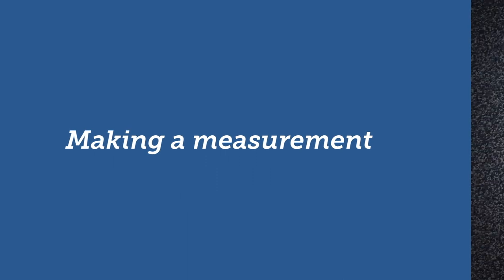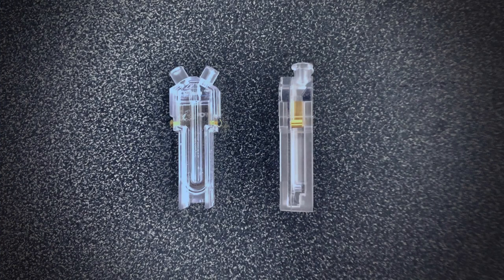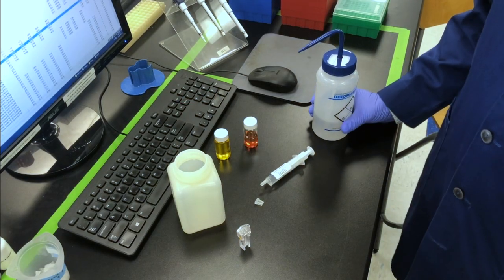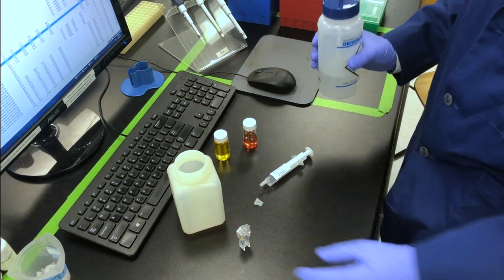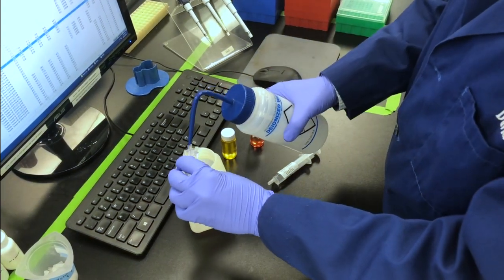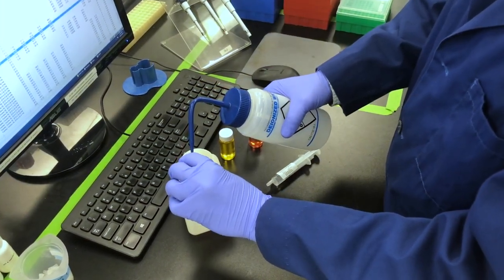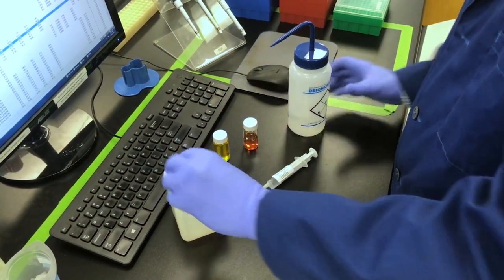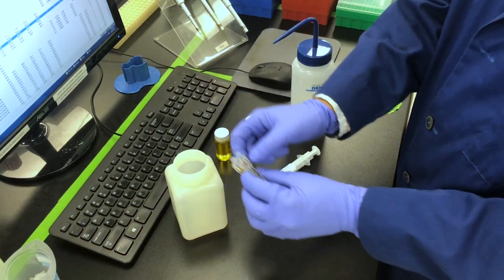We will be performing this demo with Malvern's most commonly used consumable product for zeta analysis, the folded capillary cell part number DTS 1070. Firstly, be sure to use some deionized water to rinse the cell of any dust, residual sample, or contamination from previous uses. After rinsing, give the cell a light shake and a tap to make sure that the water has been cleared out of the cell.